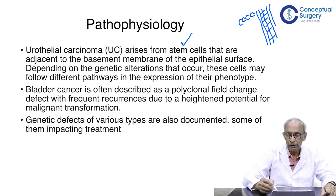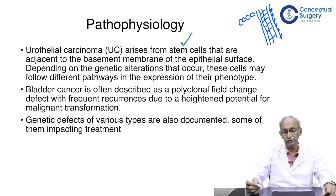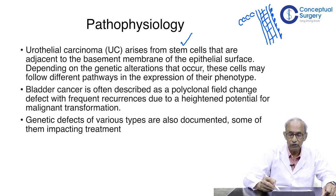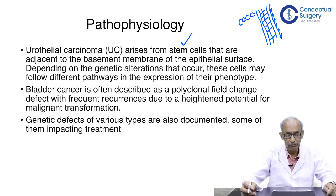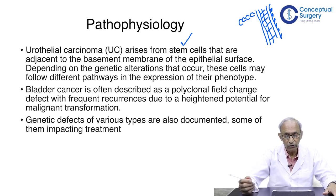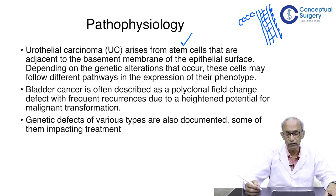Beyond the muscle layers we have the perivesical tissues with surrounding fat — this is a typical cross-section of the bladder wall. The stem cells are located adjacent to the basement membrane of the epithelial surface, and depending on the genetic alterations that occur, these cells follow different pathways in the expression of their phenotype.